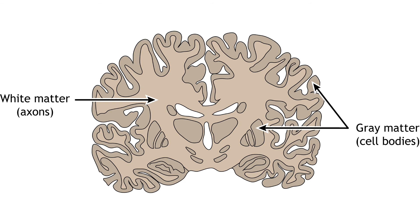Tissue in the central nervous system can be further divided into either white matter or gray matter. White matter regions are comprised of cell bodies and dendrites. Gray matter is the location of most synapses. In the brain, the surface of the cerebral cortex is a layer of gray matter. White matter can be found below the gray matter layer and is the location of the axons traveling to and from the cortical cell layer. Gray matter can also be found deep in the brain in subcortical regions that play critical roles in behavior.